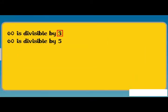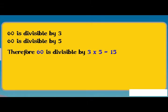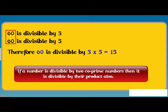Similarly, 60 is divisible by 3 and 5, which are co-primes. 60 is also divisible by 3 into 5 is equal to 15. From this, we derive that if a number is divisible by two co-prime numbers, then it is divisible by their product also.